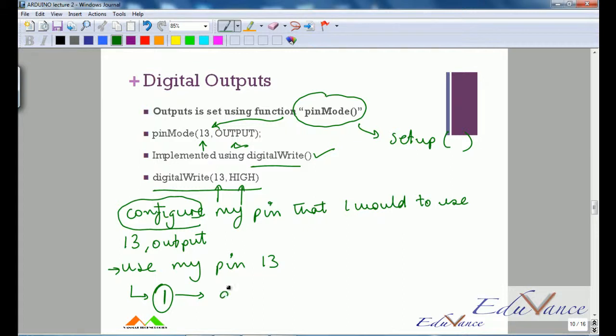Suppose I would like to write a zero, then I would write digitalWrite pin number 13, the value LOW. Just from a new user's perspective, please understand that the W is capital—this is how the function is defined.